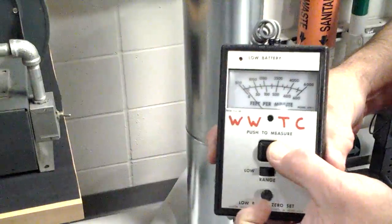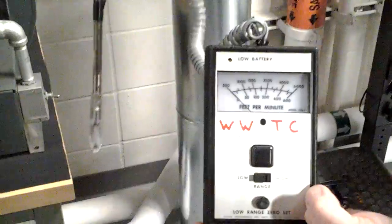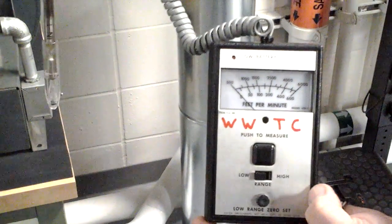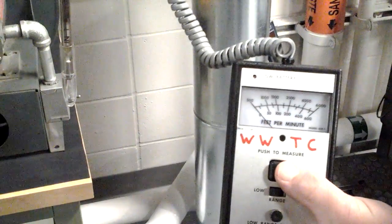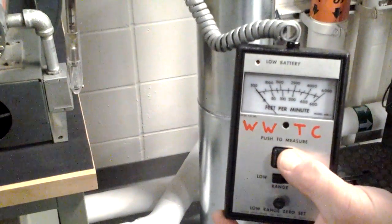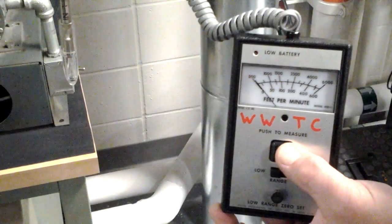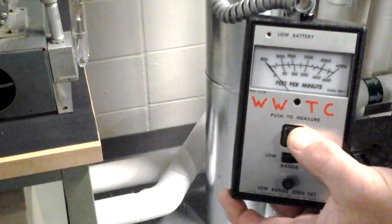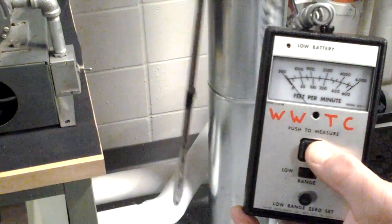Set the range switch to low. With the probe tip cover in place, depress the push to measure switch. After a momentary warm-up period, the meter will react to the low-range zero-set control knob. Adjust to position the pointer at 0 feet per minute. Release the switch.